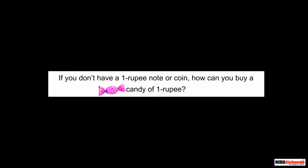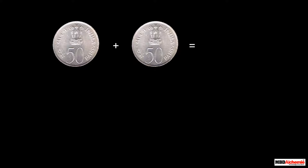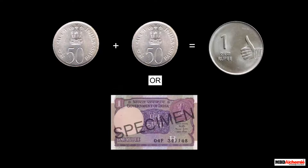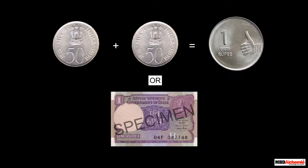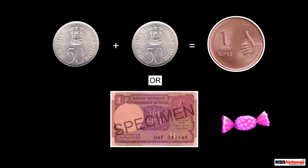If you don't have a 1 rupee note or coin, how can you buy a candy of 1 rupee? You already know that 2 fifty-paise coins make 1 rupee. Therefore, you will use 2 fifty-paise coins to buy a candy which costs 1 rupee.